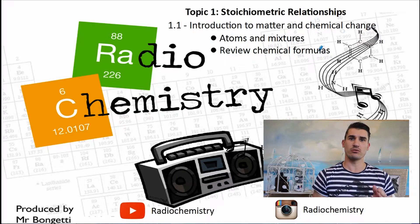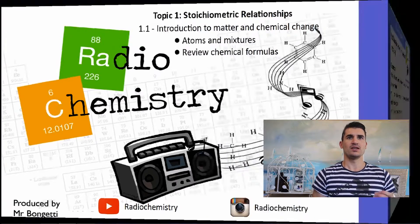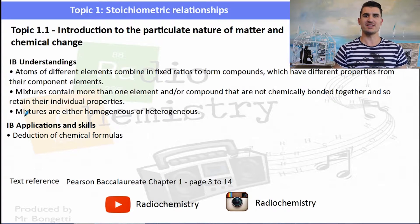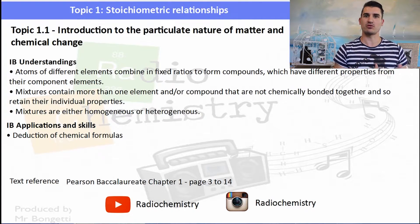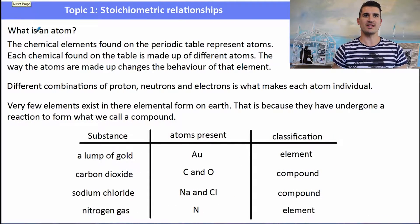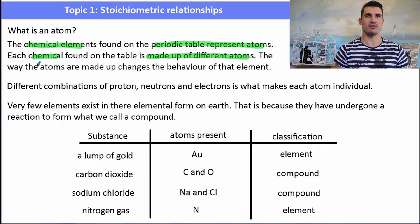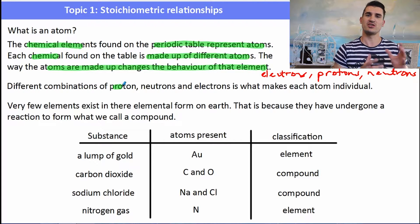We look at atoms and mixtures and we review chemical formulas. The IB understandings are that we need to have an understanding of atoms and how they combine in fixed ratios to form compounds. We need to discuss what a mixture is and whether they're homogeneous or heterogeneous, and then we look at being able to write some chemical formulas. So first off, what is an atom? An atom is the chemical elements found on the periodic table. Each chemical is made up of a different type of atom, and the thing that differentiates the atoms are the electrons, the protons, and the neutrons. So the different numbers of those differentiate the different atoms.